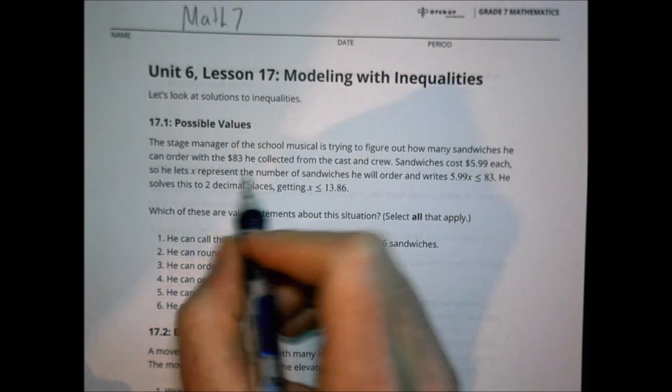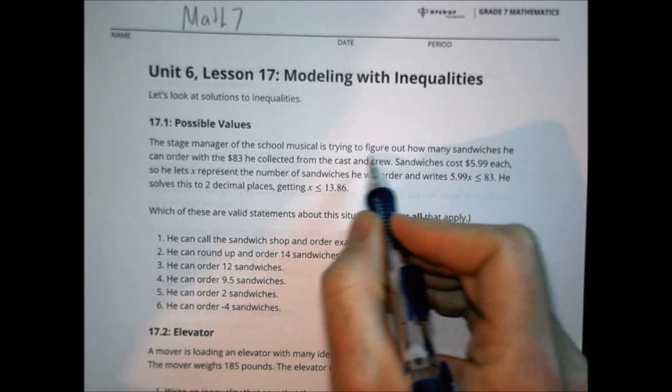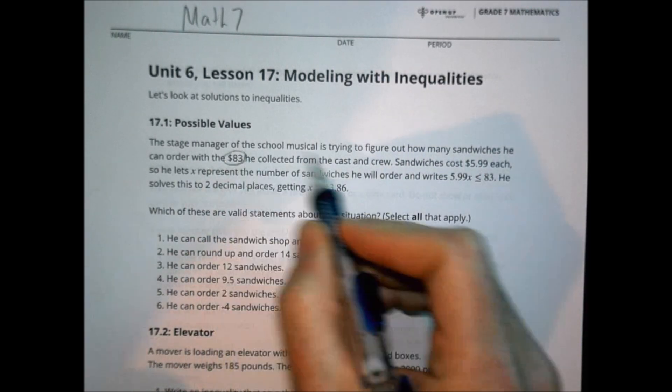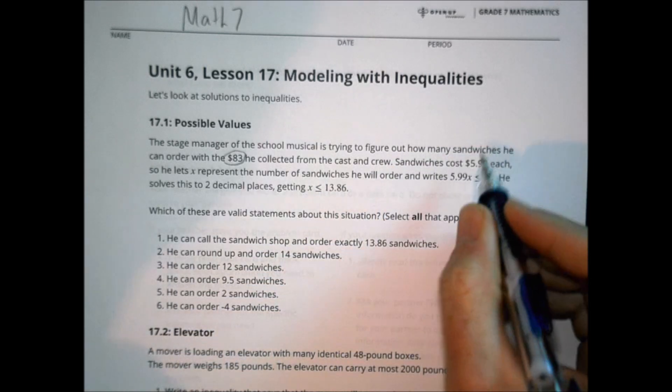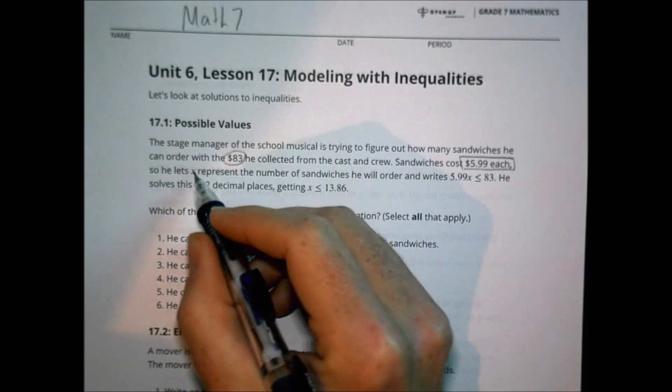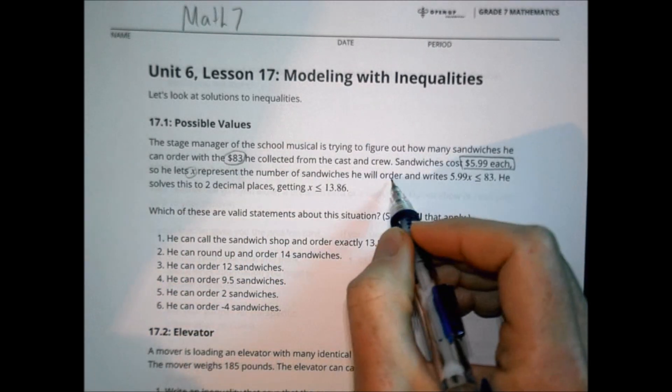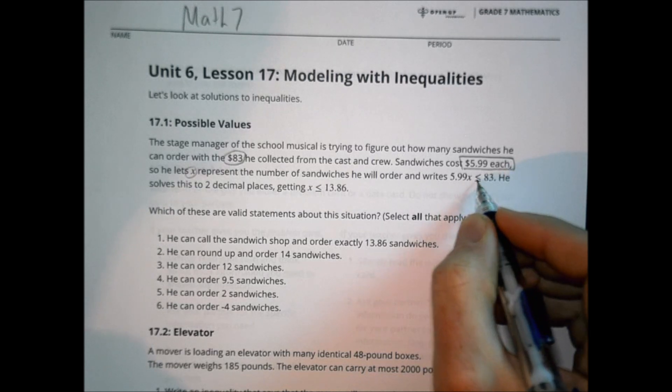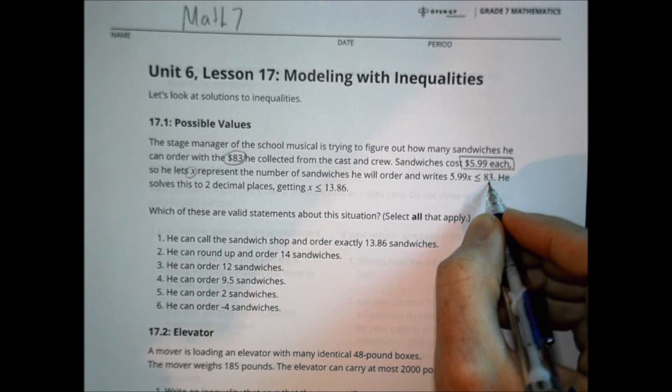In this first situation, the stage manager of the school musical is trying to figure out how many sandwiches he can order with the $83 he collected from the cast and crew. Sandwiches cost $5.99 each. He lets x represent the number of sandwiches and writes $5.99 times x has to be less than or equal to $83. He solves this to two decimal places and gets x is less than or equal to 13.86.